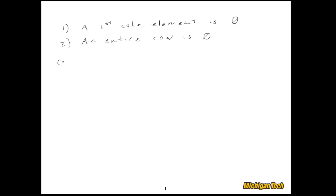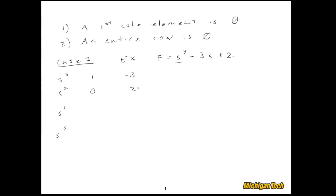But depending on further analysis of these two cases we can determine how many poles are in the right half plane, and sometimes if we have poles on the imaginary axis and what they are. Let's look at Case 1 first by example. We have some characteristic equation f(s), and we start building the Routh array based on the highest power of s. The odd terms give us 1 and -3, the even terms give us 2, so the s¹ first column element would be (0·(-3) - 2)/0 — that's undefined.